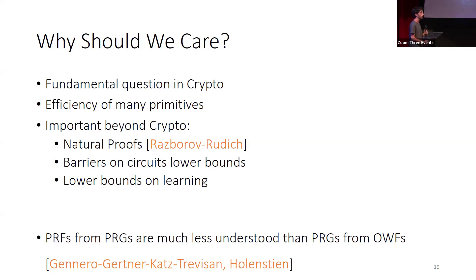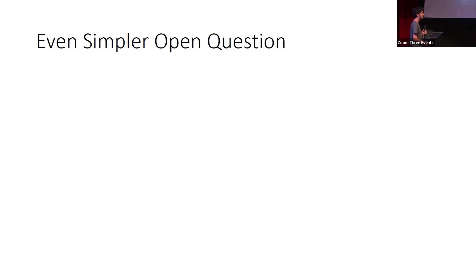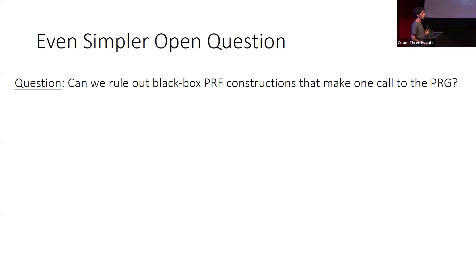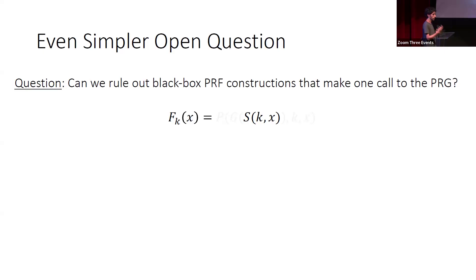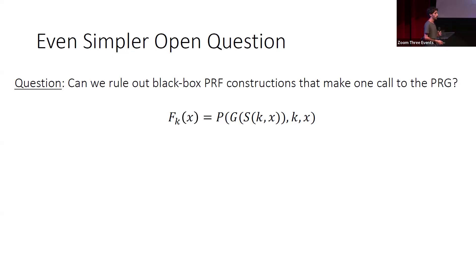This question is less well-understood than related questions, like constructing PRGs from one-way functions, for which we have good lower bounds on the number of calls needed. For constructing PRF from PRGs, there are no good lower bounds. For example, we don't know how to rule out a black-box construction of PRFs that only call the PRG once. A one-call construction looks like: given a key K and a point X, compute some function S of K and X, call the PRG once in a black-box way, and then apply some arbitrary post-processing function on the output of the PRG on K and X. Most authors believe this cannot possibly be a secure PRF, but we don't know how to rule it out.